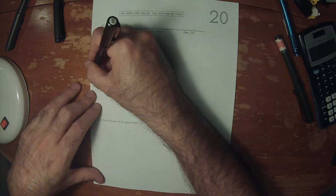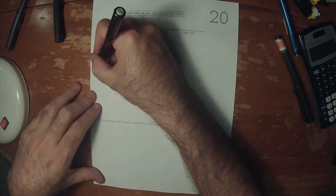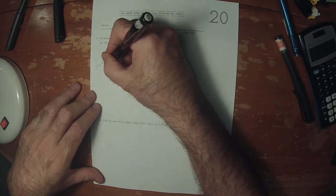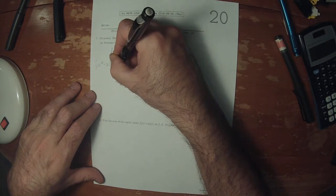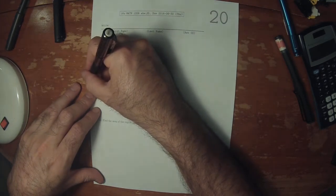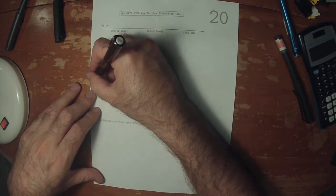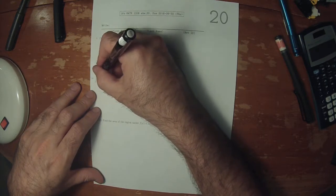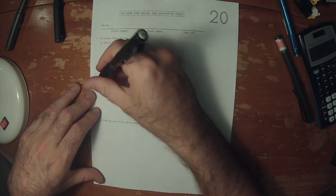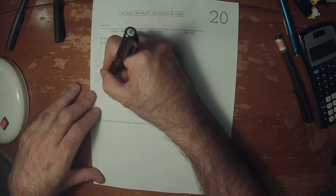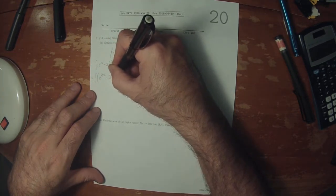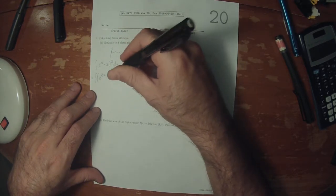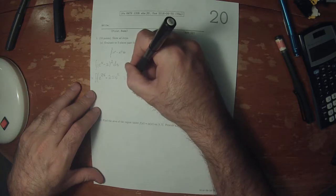So e to x minus x squared dx. That is antiderivative of e to 2x minus 2x e to x and then plus x squared dx.